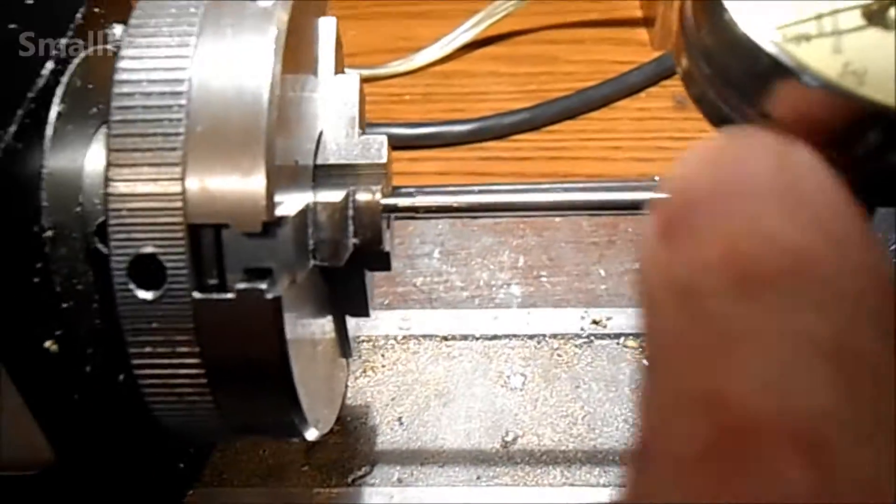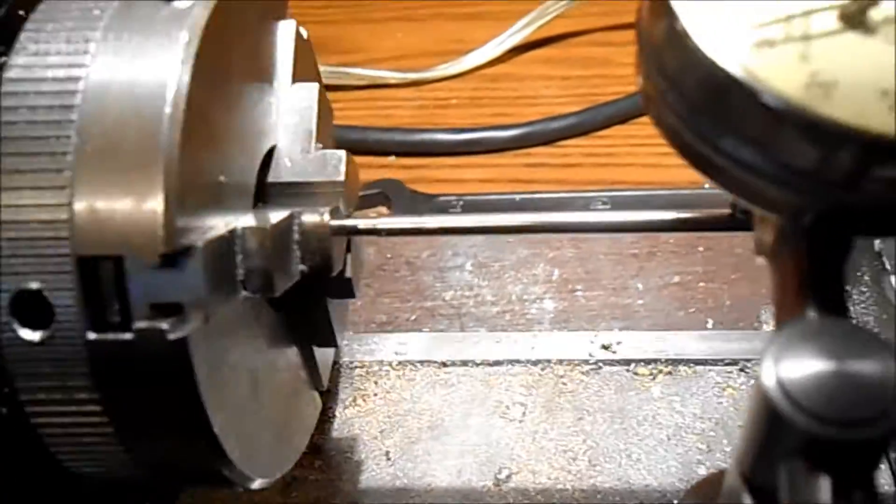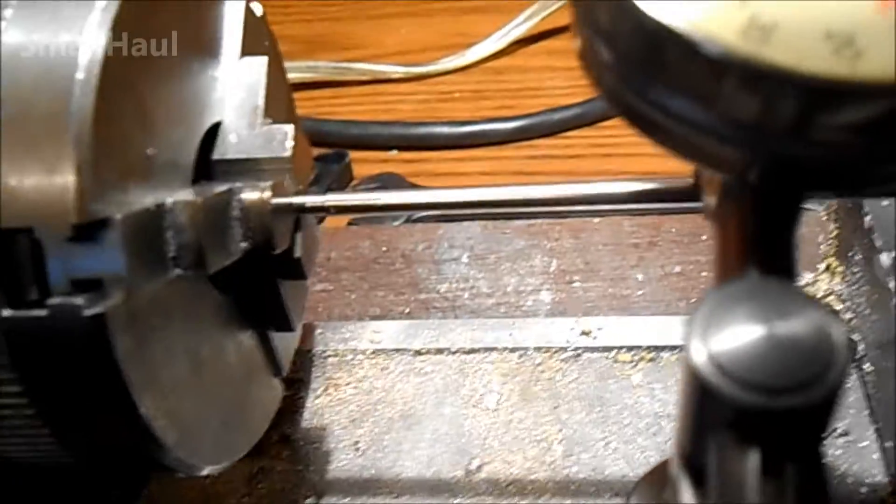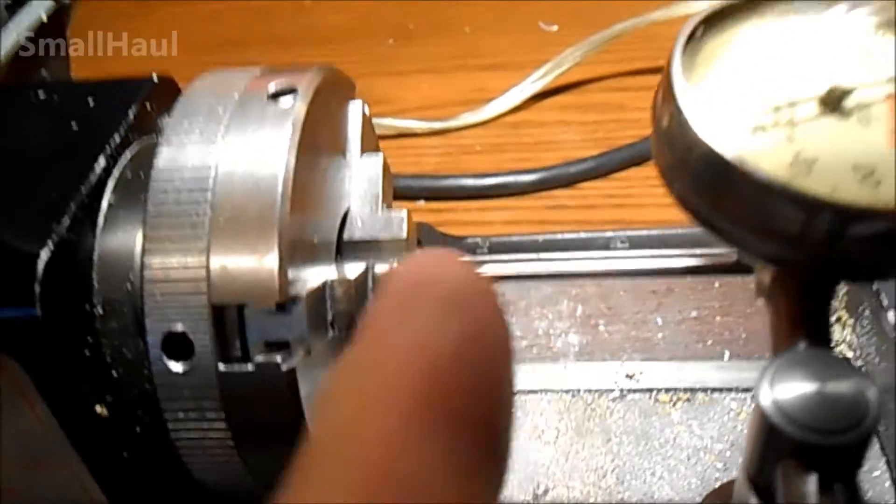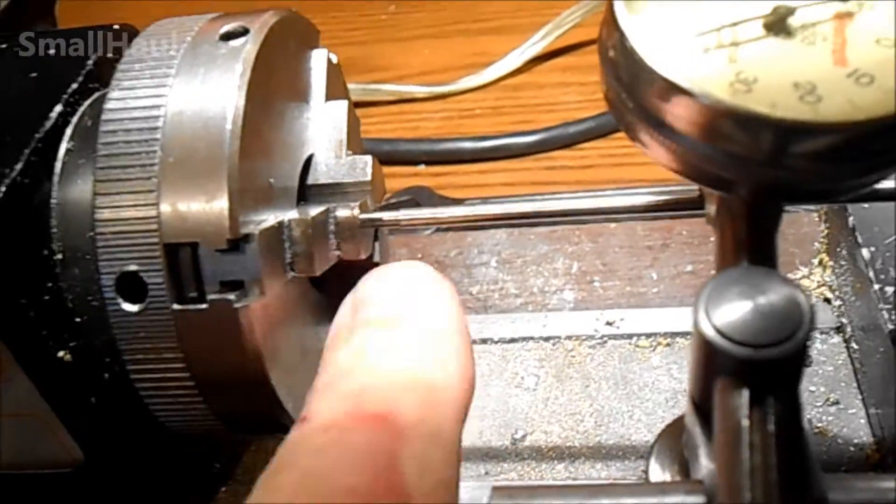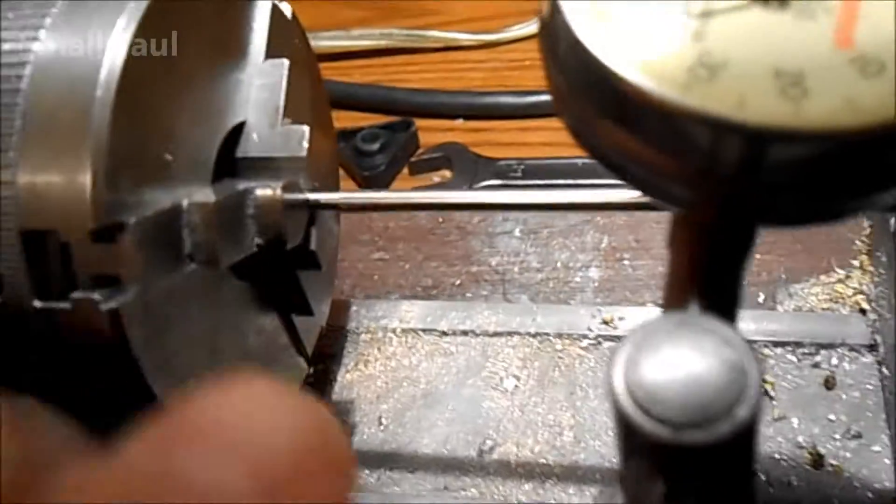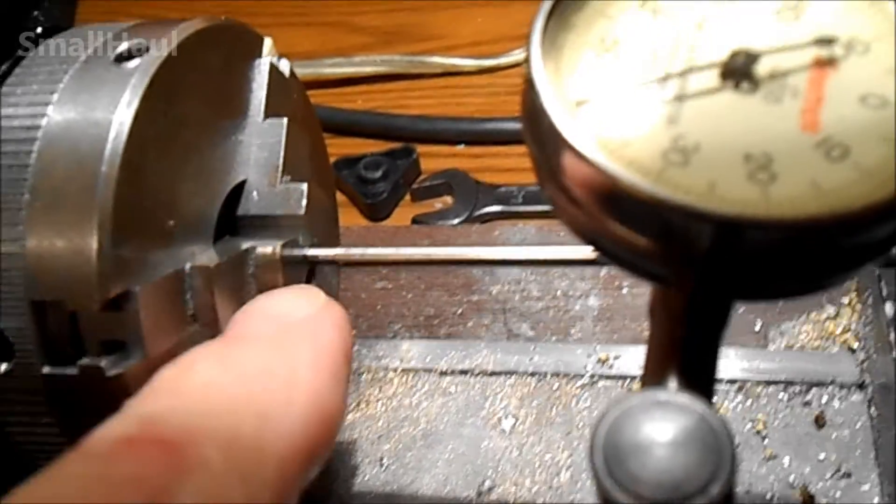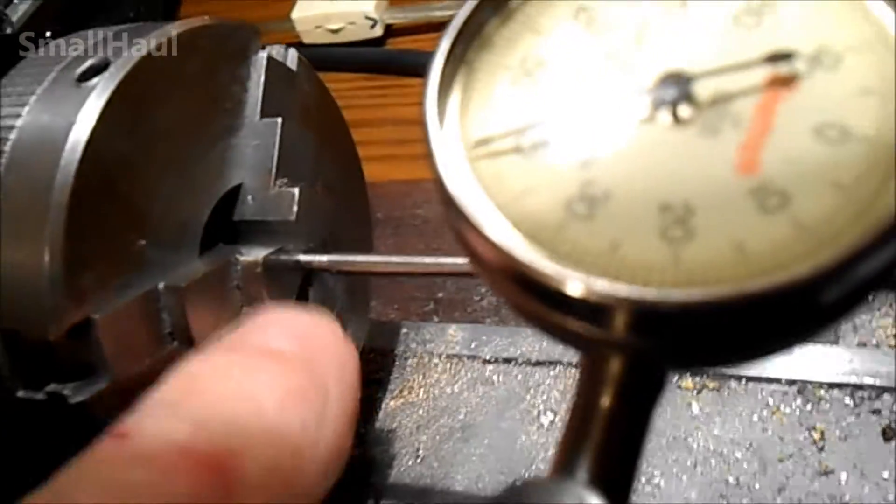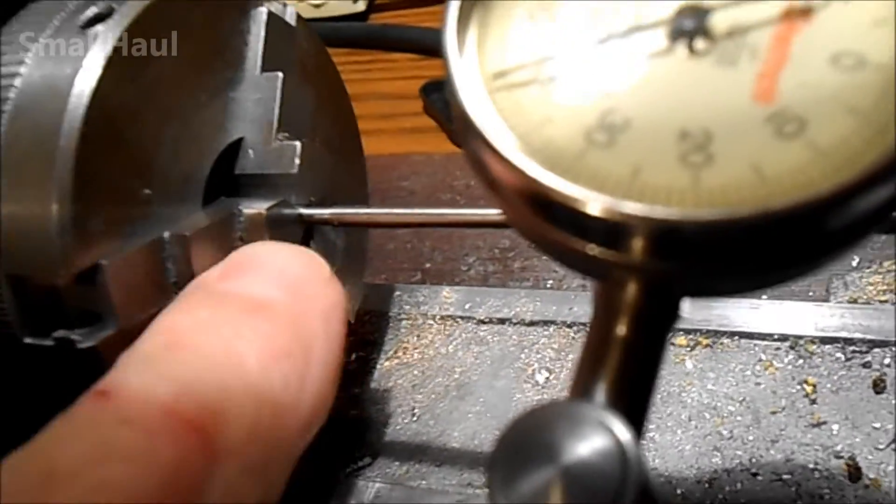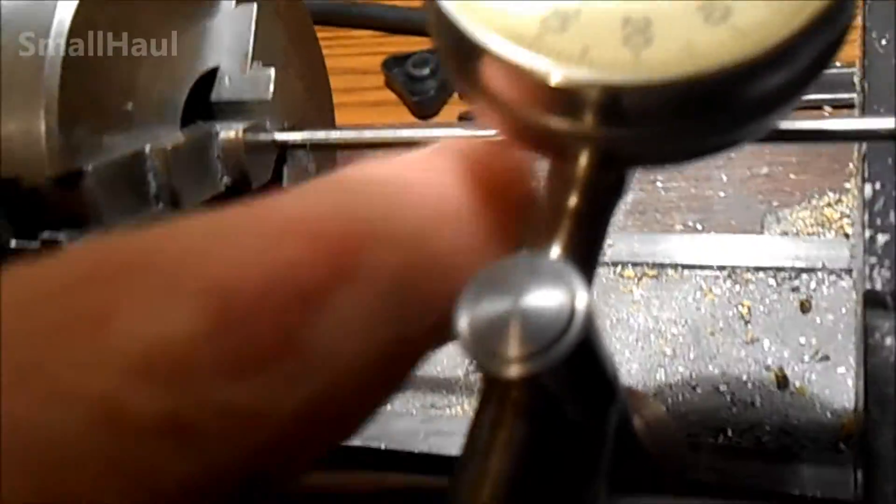This one was bent, oh gosh, a good six or seven degrees right in the middle of it. And I got it all perfect from the center out and realized that I still have like maybe five thousandths or so. This one actually has two bends in it, so it had a slight bend on this last end where the bevel gear slips on the end of the shaft, plus the big bend in the middle.